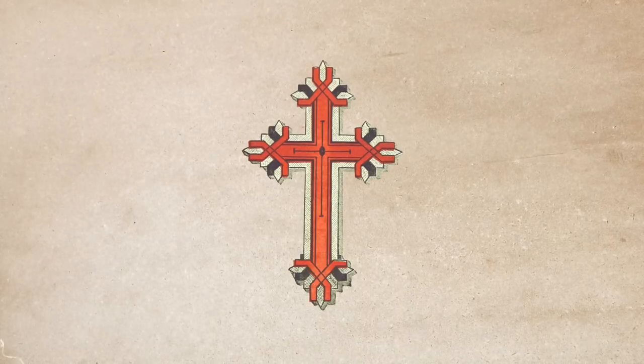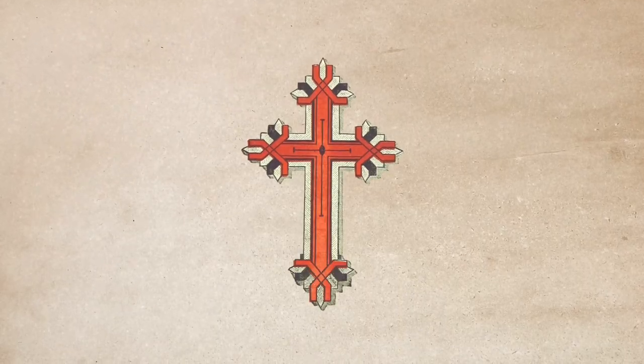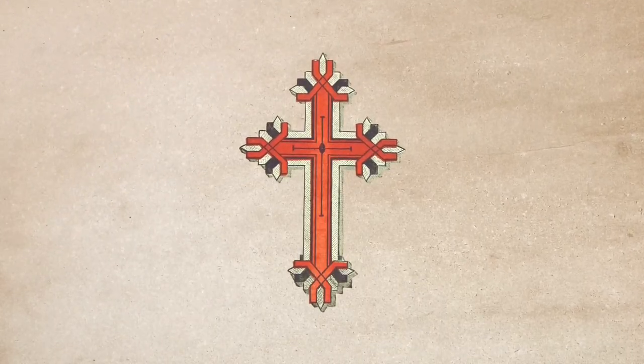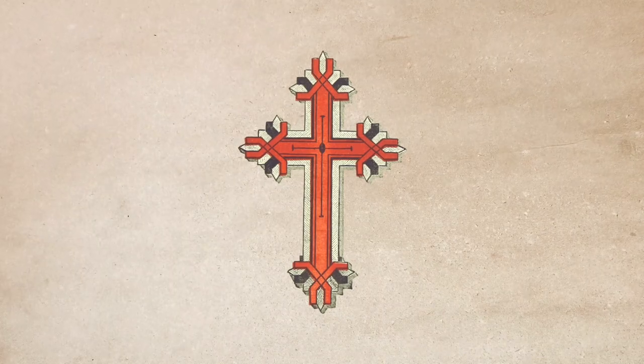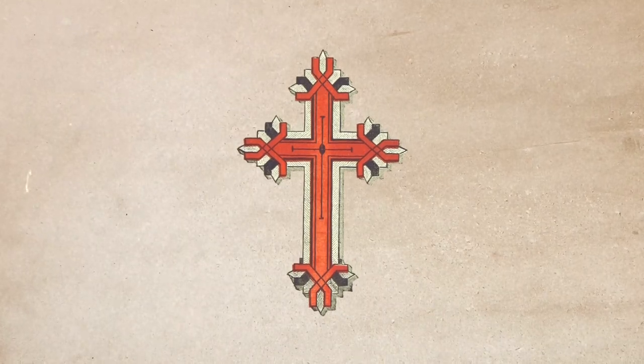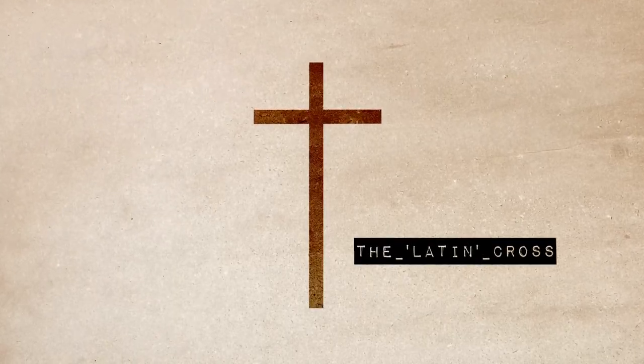The first and most obvious symbol in the Christian faith is the cross. Once a symbol of torture and death, it's become a symbol of life and of resurrection. It's the most recognizable Christian mark on earth and we use it everywhere. There are a few different designs of the cross used around the world. The most commonly used one is called the Latin cross — a simple cross and the basic shape used in Roman crucifixion.